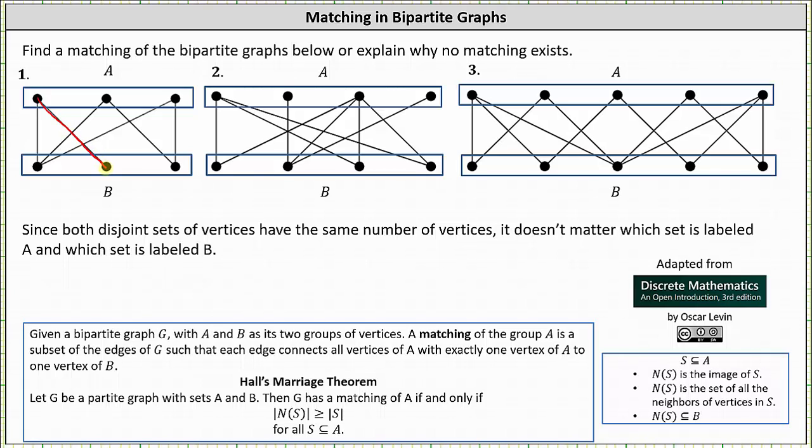And now we have a couple of choices. Let's connect the second vertex in A to the first vertex in B, and then connect the third vertex in A to the third vertex in B. This set of edges is a matching of A.